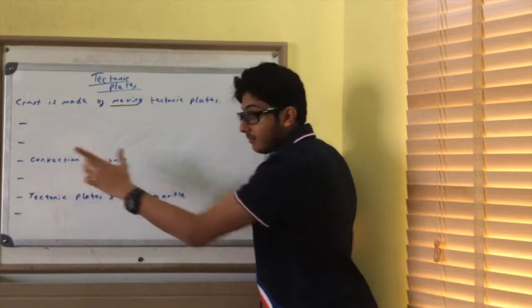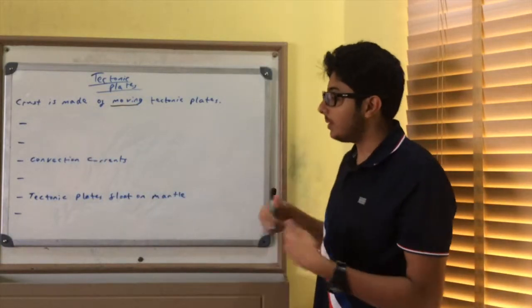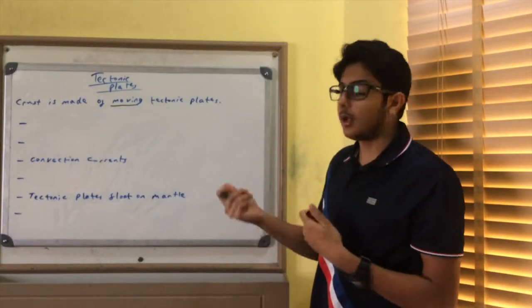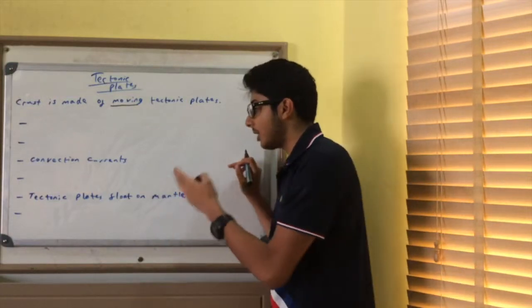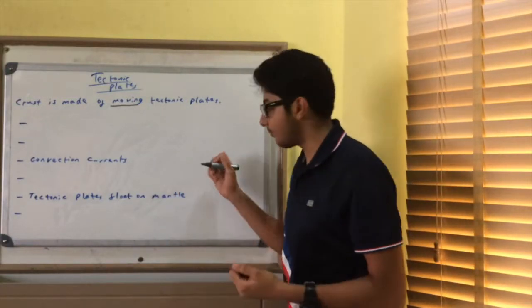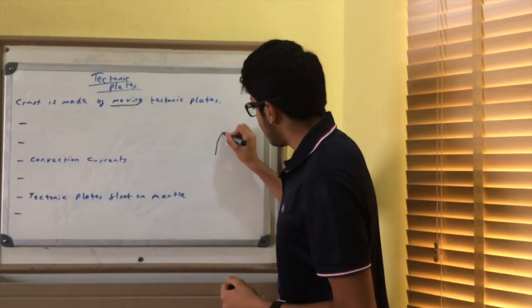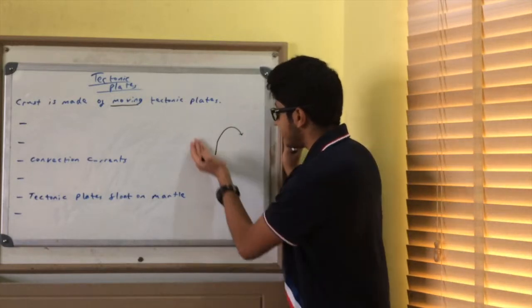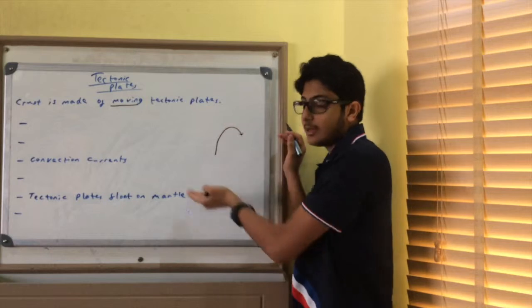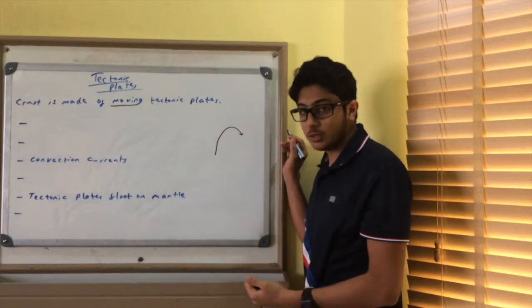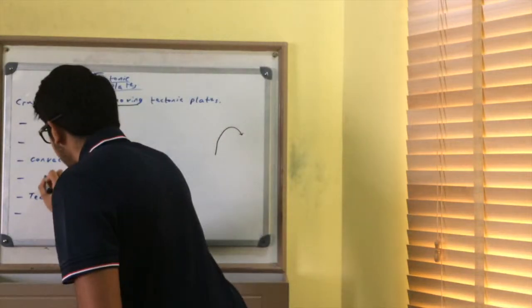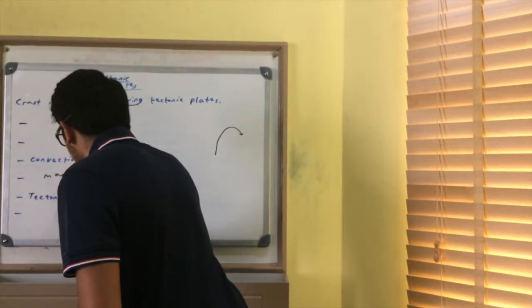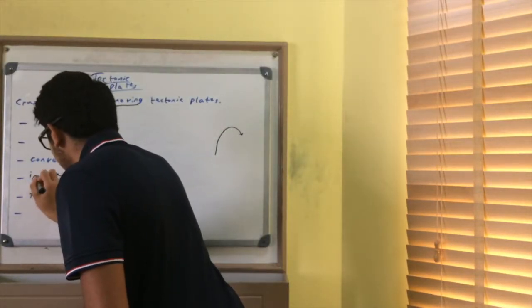So the first thing we need to know about is convection currents. I'm assuming you know this, but if not, I'll go into it. So convection from physics. And convection currents, you should know this from geography. They're like this. Rises then falls, rises then falls, rises then falls. This is convection. But convection currents, where are they found? They're found in the mantle. So convection currents in the mantle.